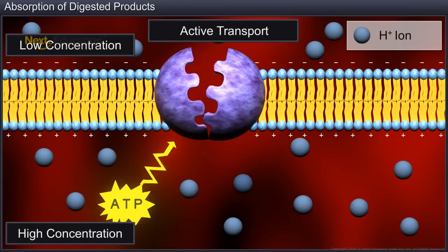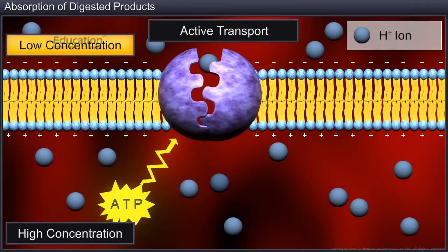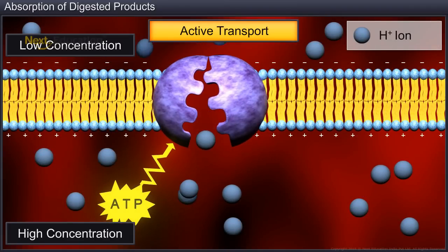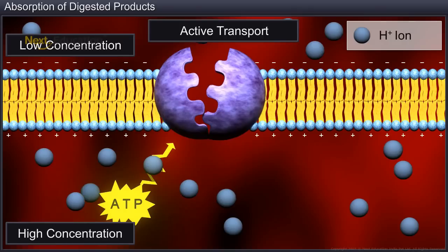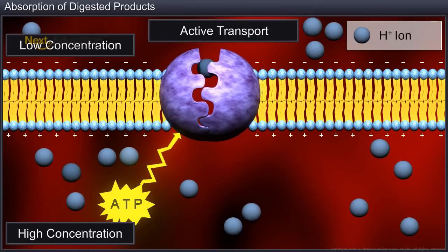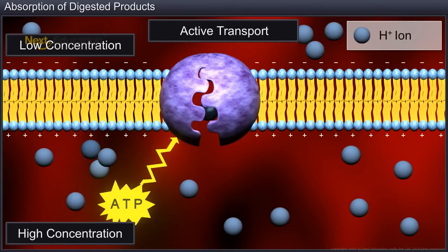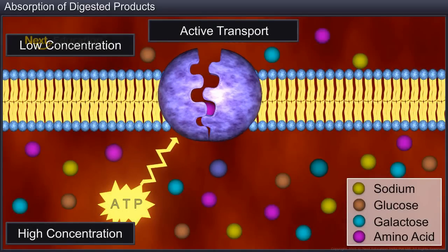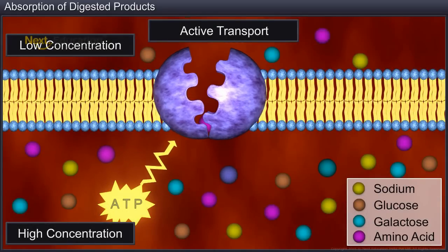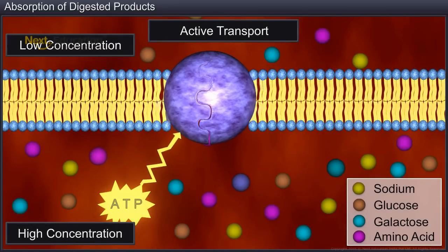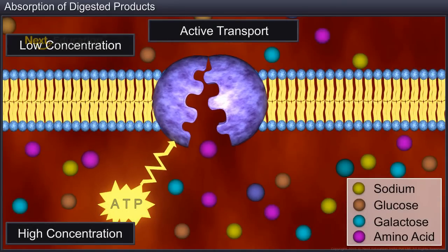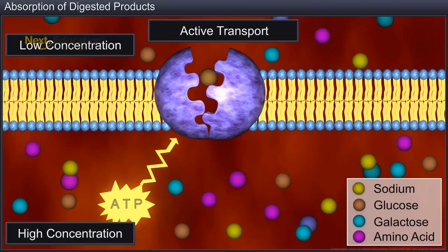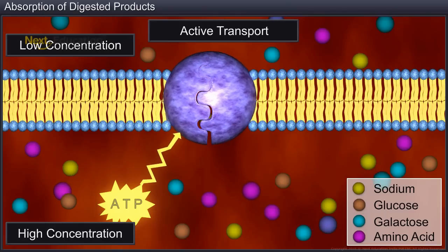Absorption also takes place from a lower to a higher medium through active transport, which is much quicker and requires energy. Nutrients such as sodium ions, glucose, galactose and amino acids are transported actively.